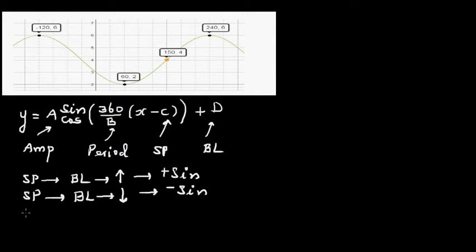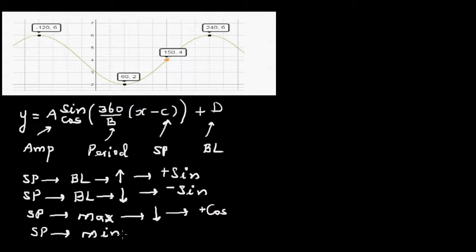If the starting point is at the maximum, it is a positive cosine graph. If the starting point is at the minimum, the graph will go up, so it will be a negative cosine graph. So everything depends on the starting point when writing the equation as a sine or cosine graph.